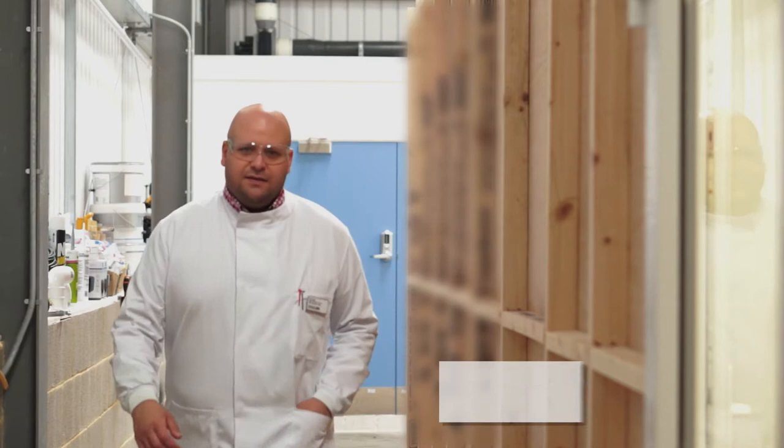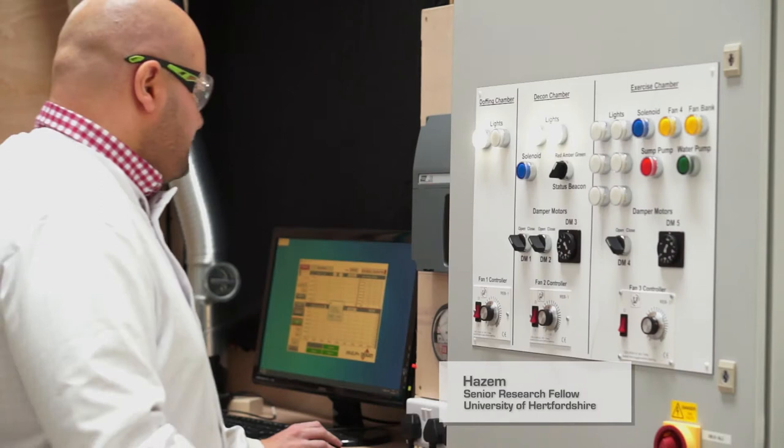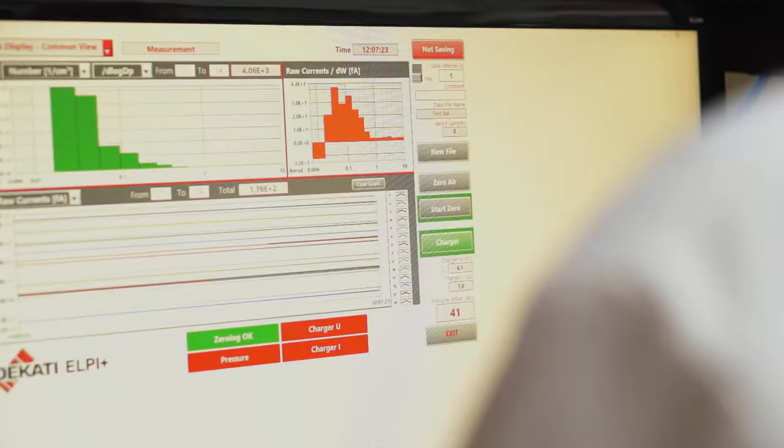My name is Hazan Mattar and I'm a senior research fellow at the University of Hertfordshire. I work within the toxicology research group and I'm specifically a dermotoxicologist, so I specialize in assessing how skin is exposed to toxic chemicals, whether that's from the environment or deliberate exposures.